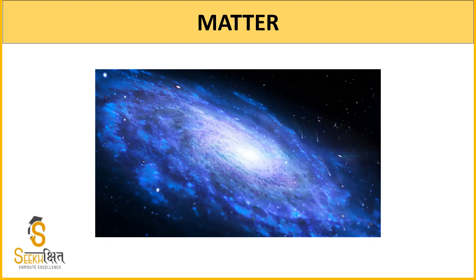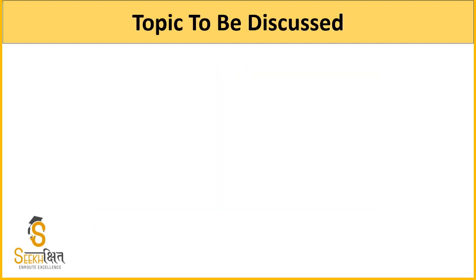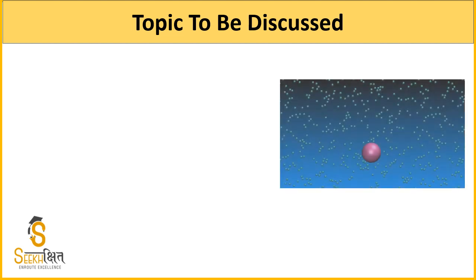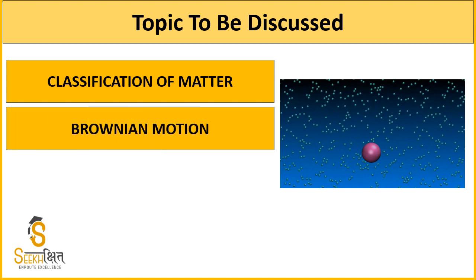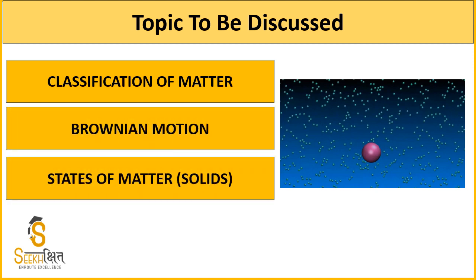Today's topic is matter. I will give you a brief description of what matter is. In our universe, any object that occupies space and has mass is matter. We will discuss in detail about matter. Today's topic is the classification of matter — we can classify matter based on its properties. Next is Brownian motion, and next are the states of matter.